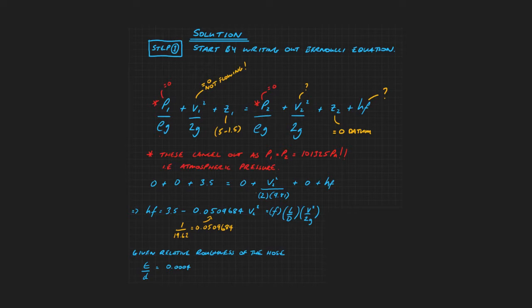Step one, we start off by writing out Bernoulli's equation. The first thing we can do is note that P1 and P2 are at atmospheric pressure. We're going to assume that these are equal. Hence, they equal 0. And then we're going to try and find an equation for the frictional head loss as we travel through the pipe. But note that we've already been given the relative roughness of the hose.